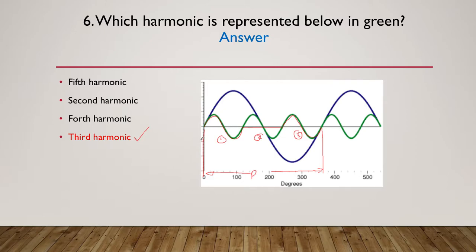You can also count by counting the bumps either all above or all below — one, two, three above or one, two, three below. Don't count them all together because they add up to six. Count all bumps above or all bumps below only.